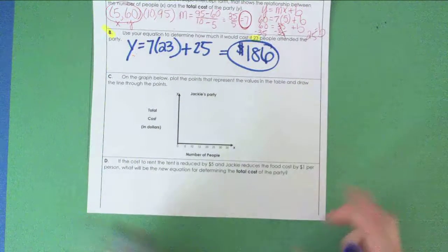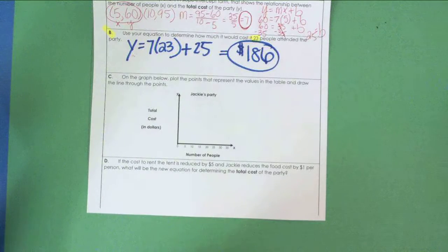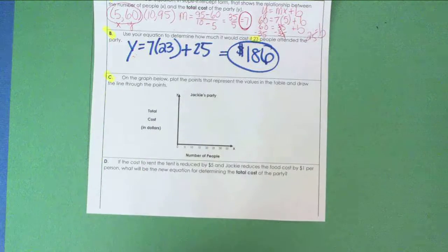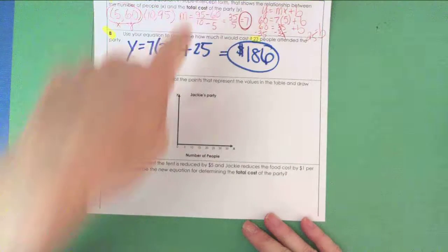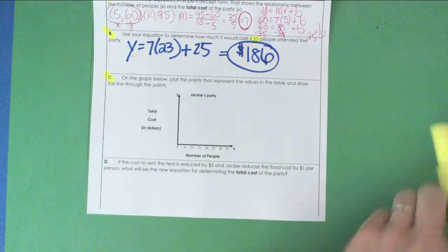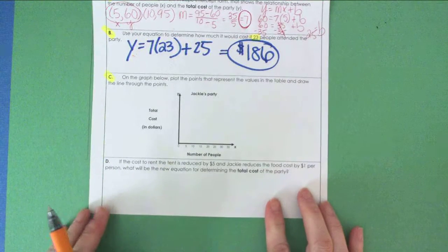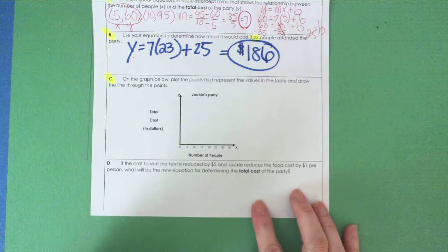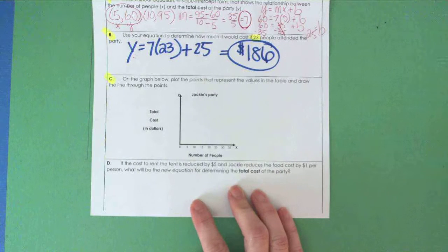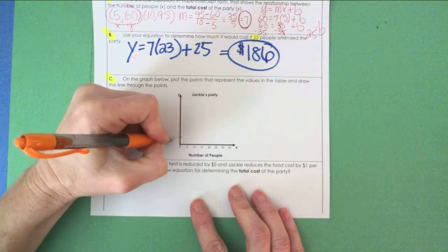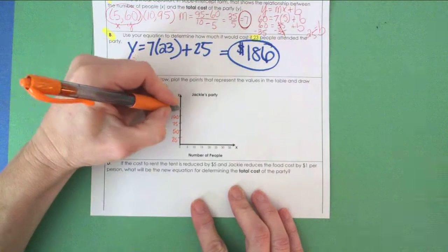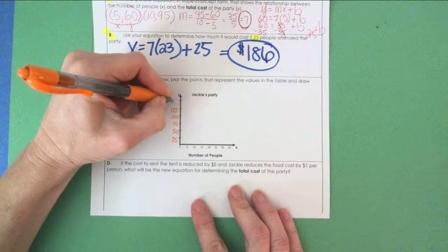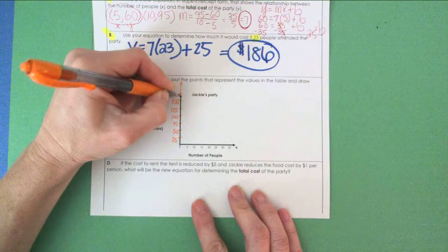Letter C. On the graph below, plot the points that represent the values in the table and draw the line through the points. We've got our cost and our people. They put the people in: 0, 5, 10, 15, just modeling our table up top. But they don't give me any Y values. I've got to get up to about $200 at 25 people, so I think I'm going to go by 25. So I'll go 25, 50, 75, 100, 125, 150. Let me extend this. 175 and 200.